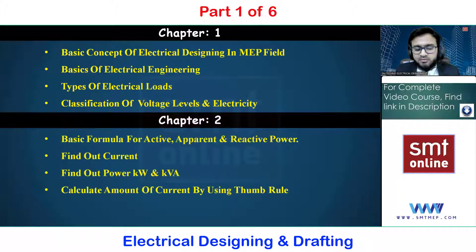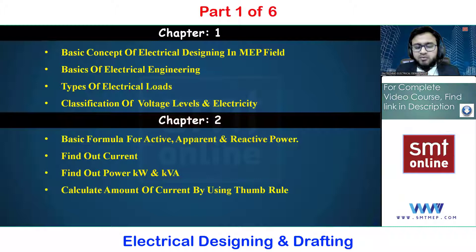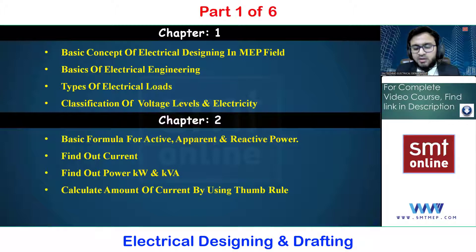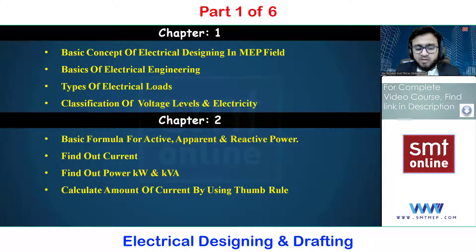In chapter two, we are going to understand the basic concepts of power. Power is simply the product of voltage and current. In electrical systems, power is classified into three types: active power (also called true or real power), apparent power, and reactive power. Reactive power is the power that helps boost the supply. Using these basic formulas, we will find the amount of current and power in terms of kilowatts and kVA. We will also cover calculation of current using the thumb rule.